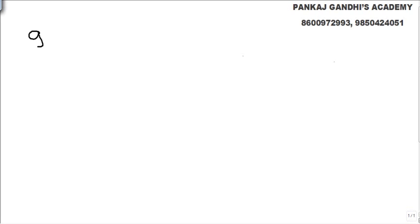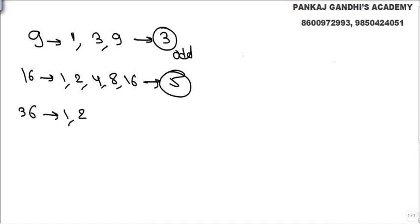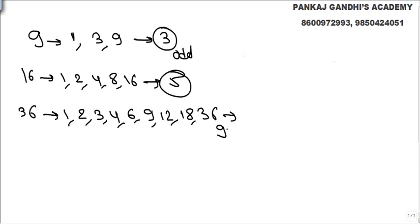What is the logic behind perfect squares? If we take a perfect square like 9, it is divisible by 1, 3, and 9 — total number of factors: 3, which is odd. For 16, it is divisible by 1, 2, 4, 8, and 16 — 5 factors, again odd. For 36, it is divisible by 1, 2, 3, 4, 6, 9, 12, 18, and 36 — 9 factors, again odd.